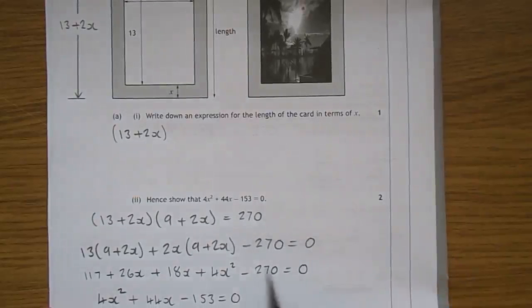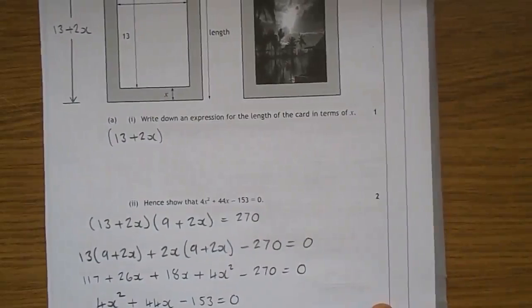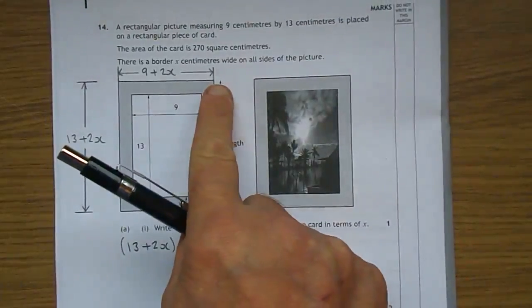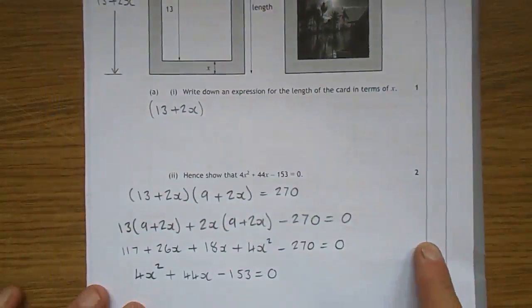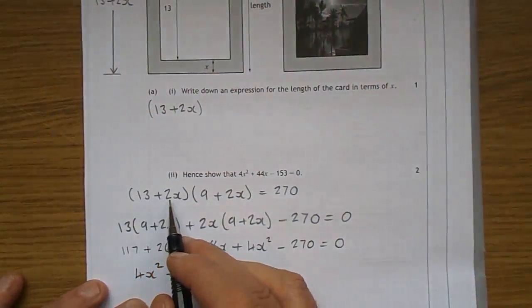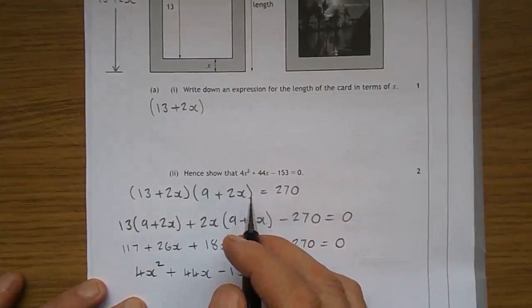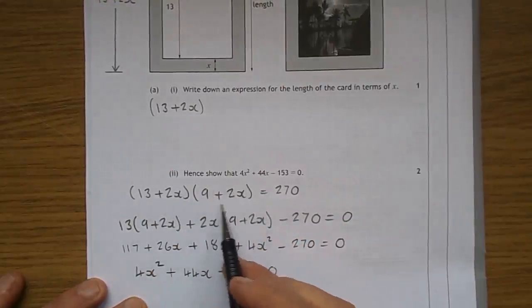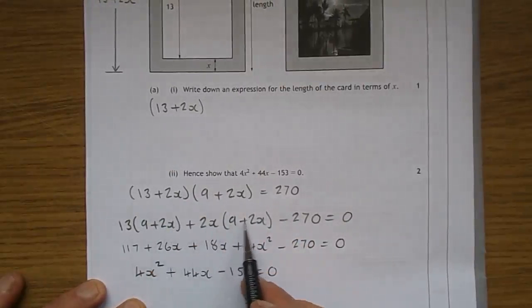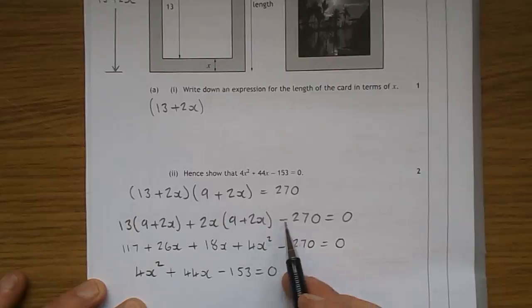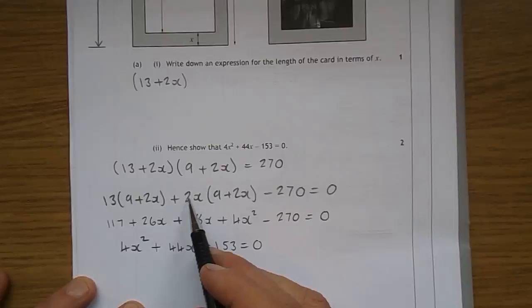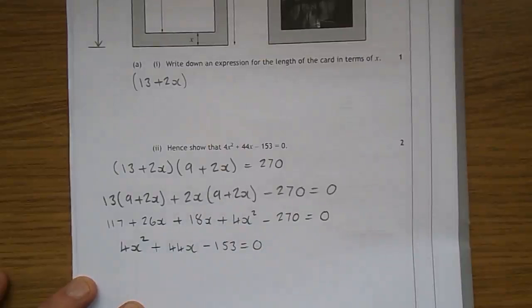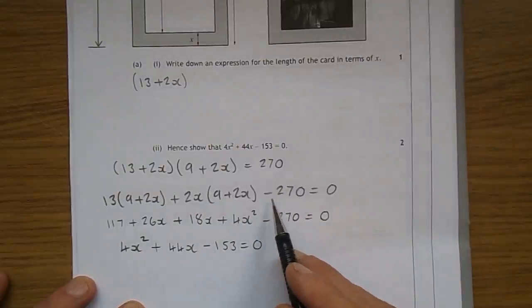Hence, it says, show that that is equal to 0. It seems a bit random, but until you realise that the area of the card is length times breadth, and they tell you that that's 270. So, here we have it here. 13 add 2X, that's the length, times the 9 add 2X, the breadth gives you 270. 13 times 9 add 2X, plus 2X, times 9 add 2X. I've brought that over just to save a bit of time. It equals 0. Multiply all this out. Again, use your calculator, 13 nines, 13 twos, don't need a calculator for that. 2X times 9, and 2 times 2X, gives 4X squared, and there's a take 270.